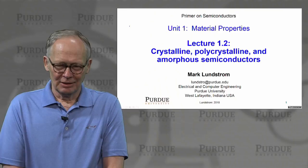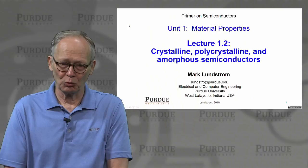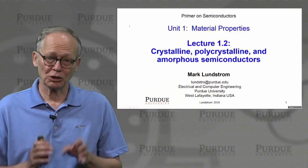Hello again. Let's continue our discussion of the material properties of semiconductors. In this lecture, we'll be talking about the three main types of semiconductors: crystalline, polycrystalline, and amorphous.